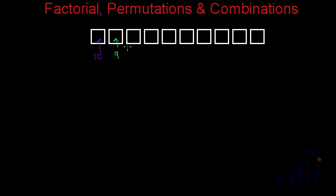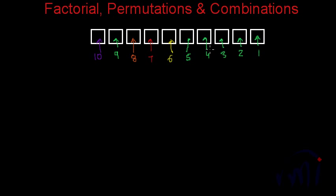If we want to fill the third place, we will have 8 choices. Similarly, we will have 7 choices for the next place, 6 choices for this one, 5 for this, 4 for this, 3 for this, 2 for this, and 1 for the last place. These are the number of choices available for each particular place. We can start from anywhere, but we will always have the same type of choices.